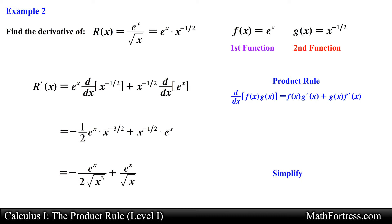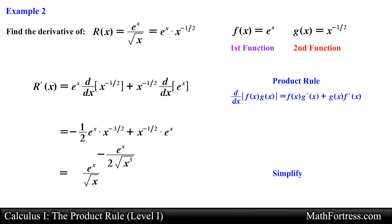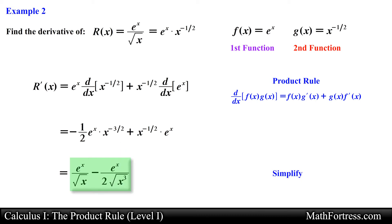Simplifying and rewriting the expression we obtain the following for the derivative: e to the x over the square root of x minus e to the x over 2 times the square root of x cubed. Keep in mind that you might need to rewrite an expression so that you can apply a specific differentiation rule.